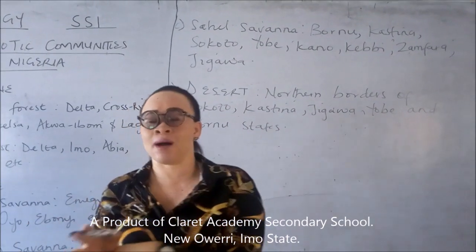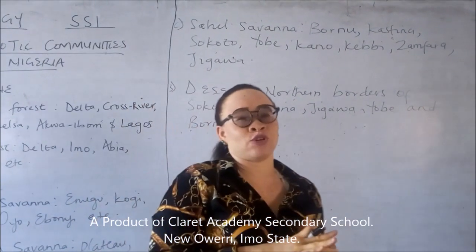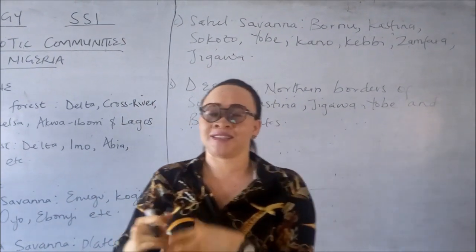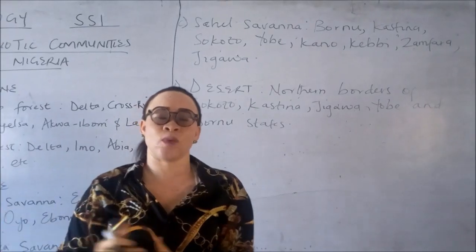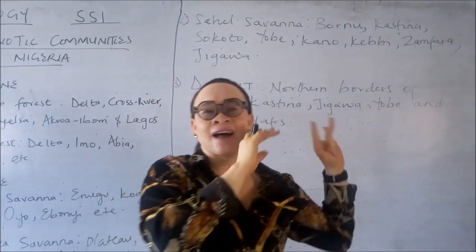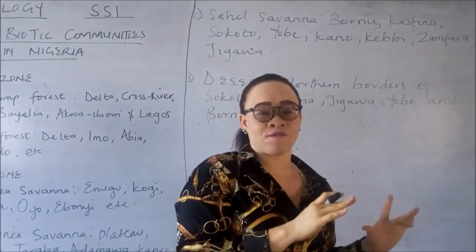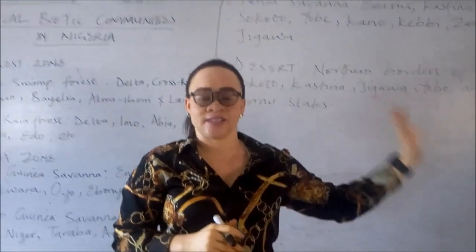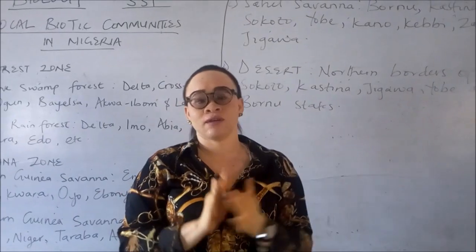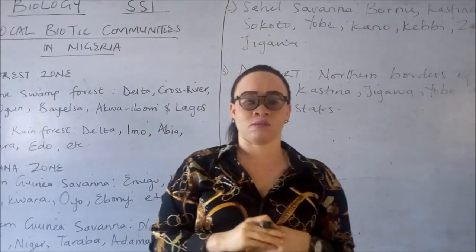Animals like camel and plants like cactus, because these are plants and animals that can survive in areas where there is no rainfall, and it is a high temperature region. Thank you very much.